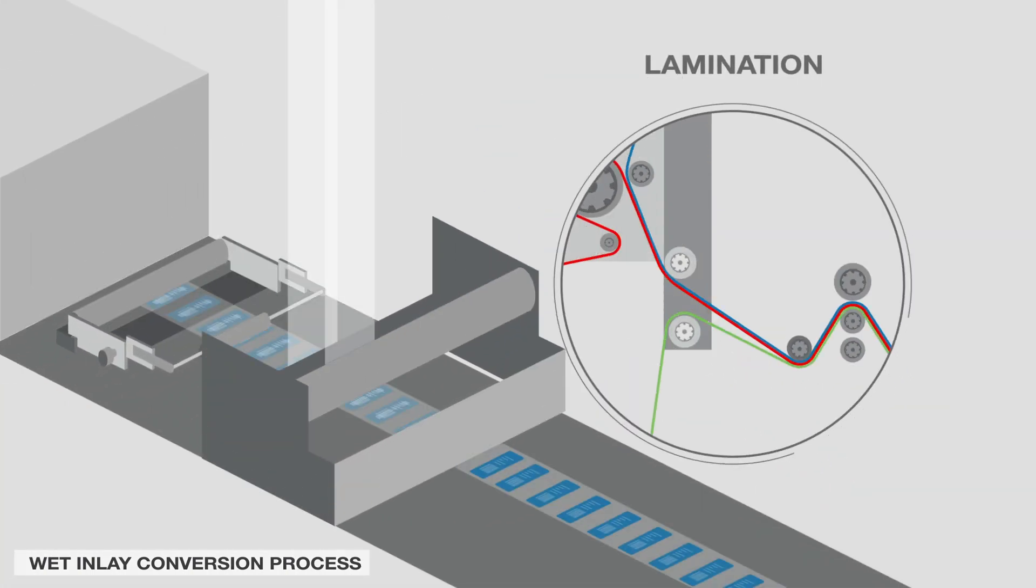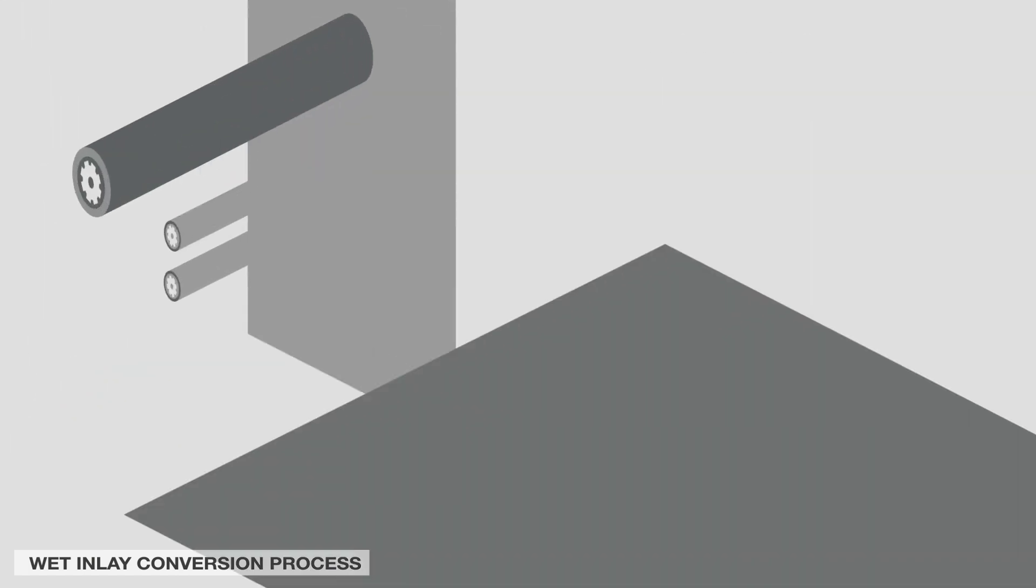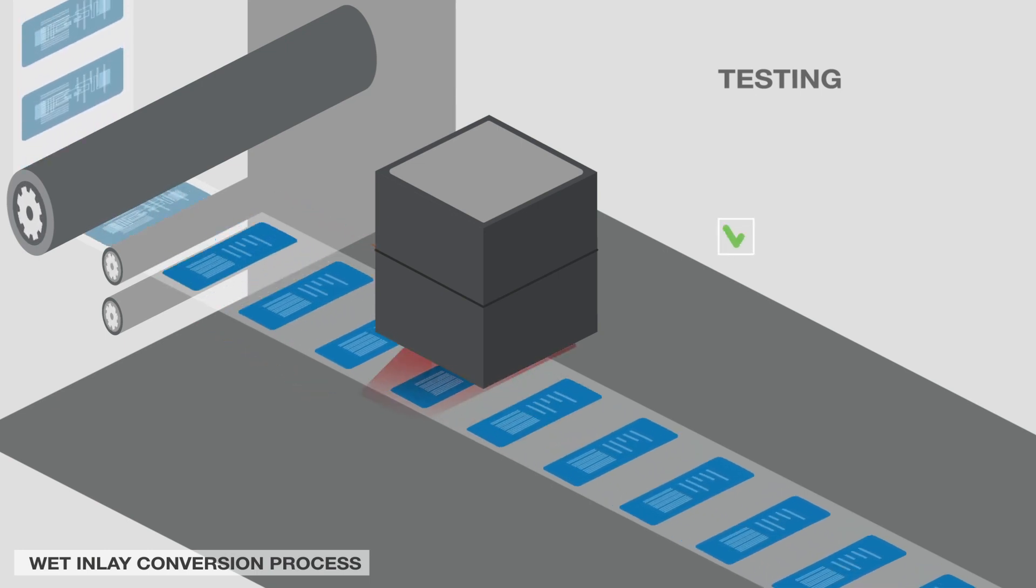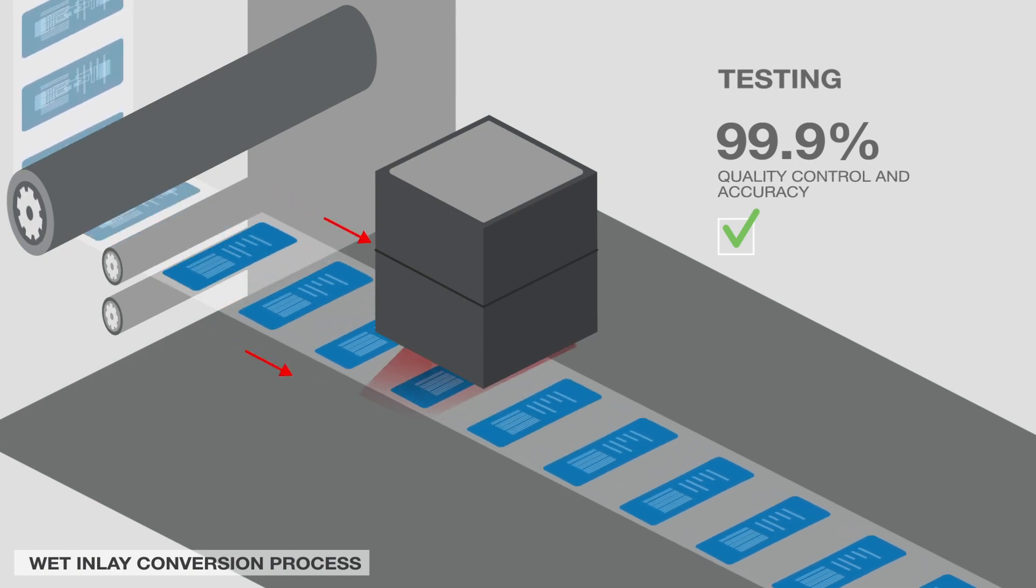The face material is then laminated onto the top of the inlays, followed by die-cut or perforating process. Next is end-of-line readability verification, where each tag is individually read-tested to guarantee 99.9% quality control and accuracy.